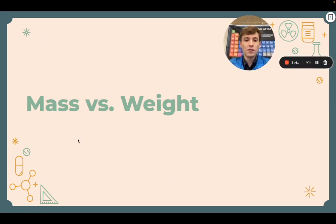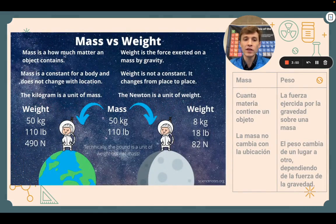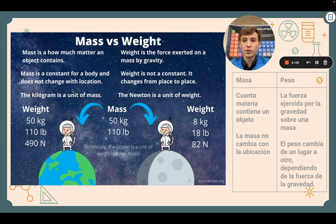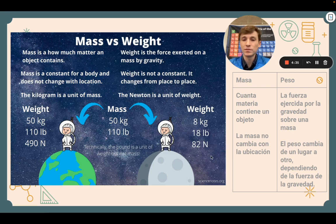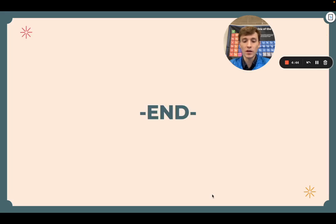Mass and weight are two very similar yet different concepts. Mass is how much matter an object contains — a measurement of how much matter — whereas weight is the force exerted on a mass by gravity. Mass is constant for an object and does not change with location, so you are going to be 50 kilograms on the moon and 50 kilograms on Earth. Weight is not constant — it changes from place to place. You might weigh 110 pounds on Earth, but your weight on the moon will only be about 18 pounds. And that is going to wrap it up.